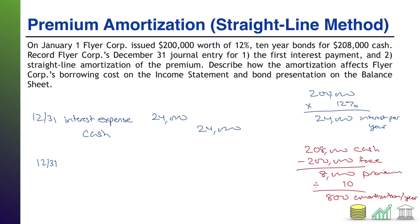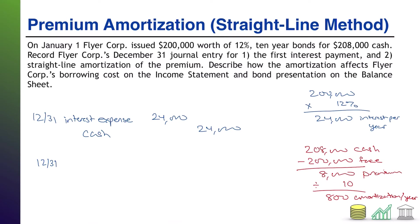If you think about a premium, when it is established, it is a credit. For example, when we issued this bond — we didn't have to do this journal entry, but it would have looked like this: Cash $208,000, Bonds Payable $200,000, Premium $8,000. So notice the premium is a credit. Amortizing reduces the premium, so to reduce it we are going to have to debit it. For our 12/31 journal entry, I'm going to put a debit to Premium on Bond Payable for $800 that first year.